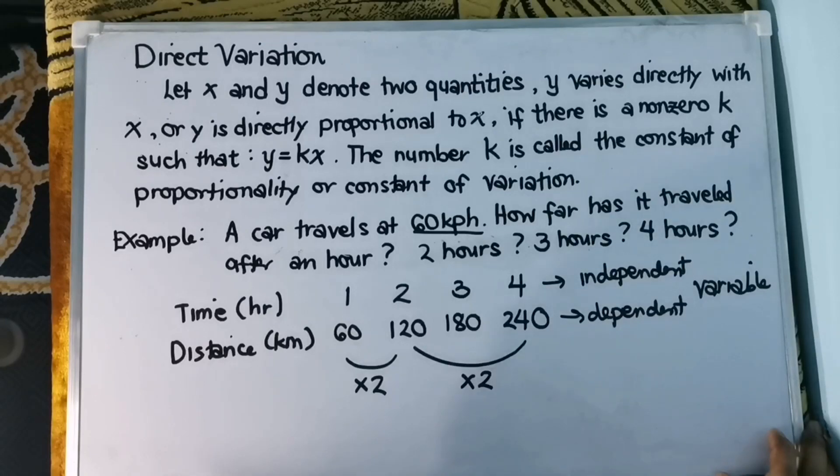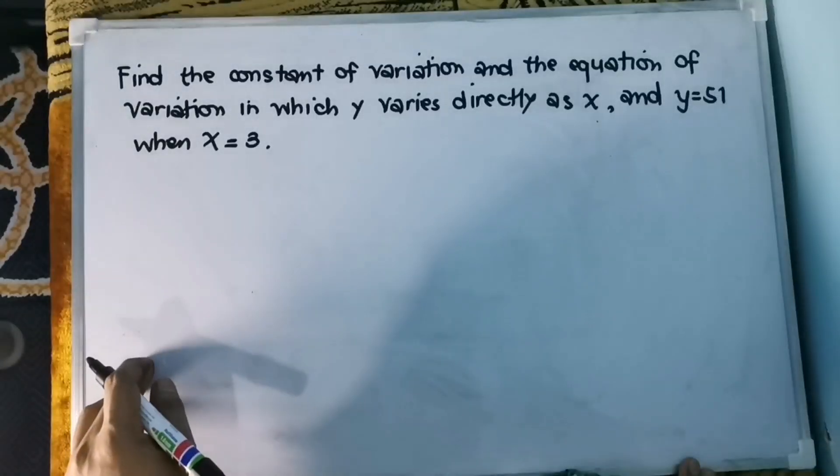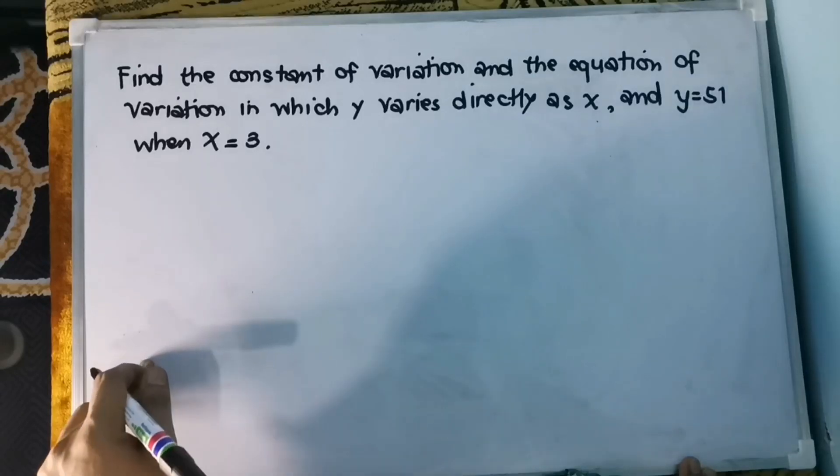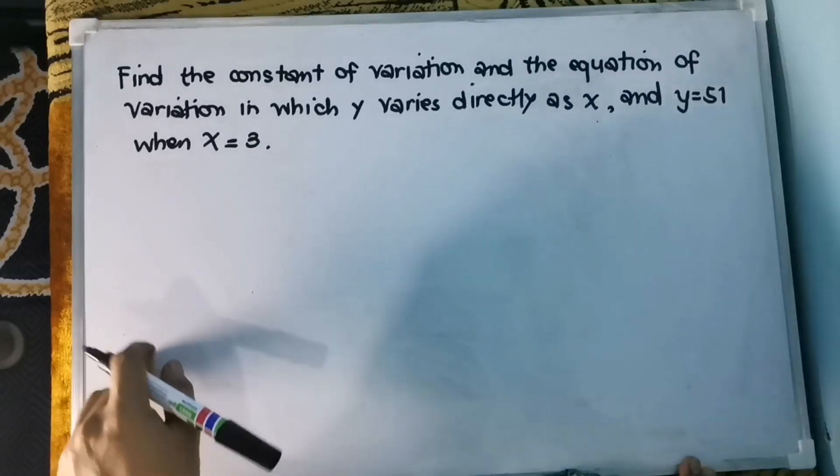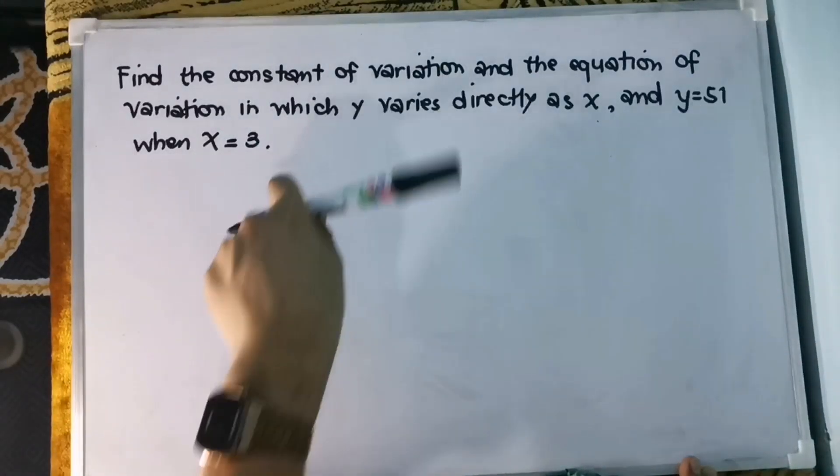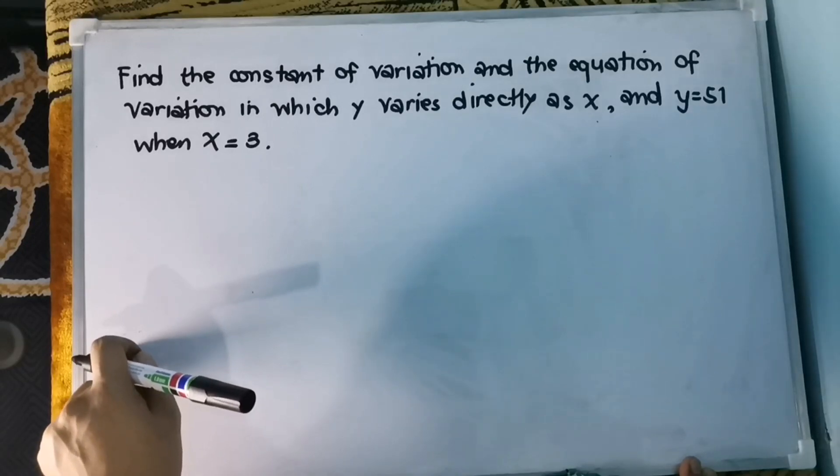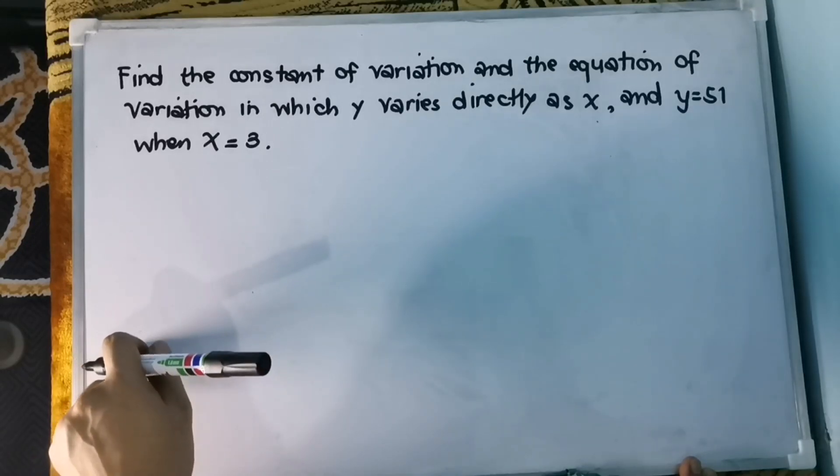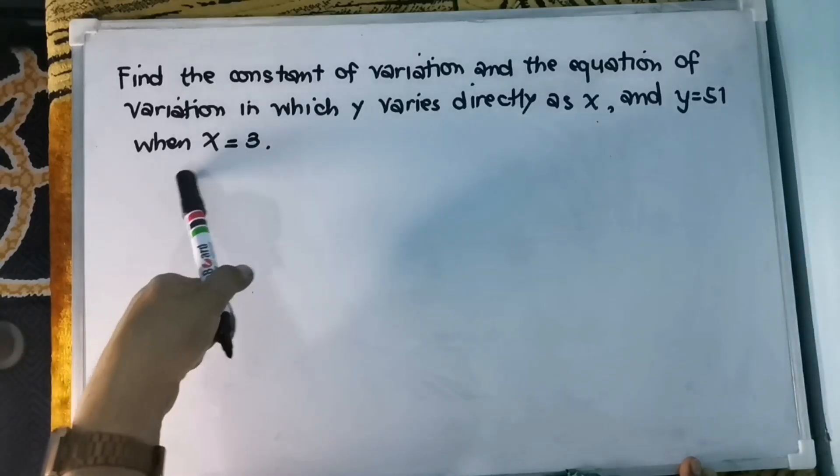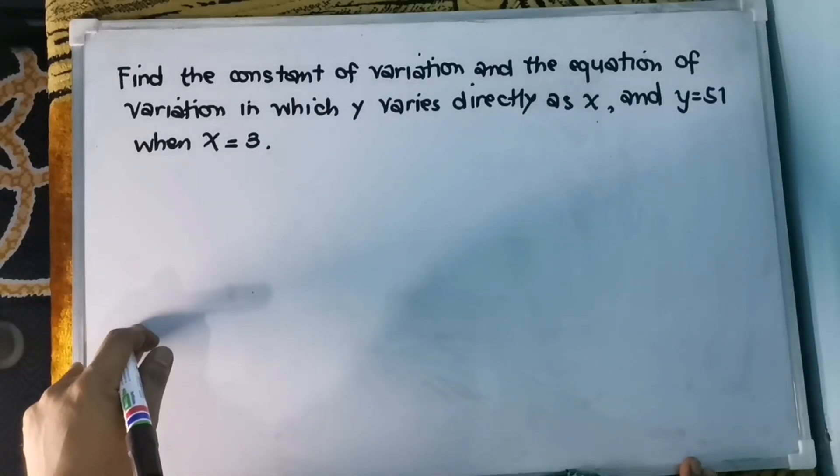Let's have another example that involves direct variation. Find the constant of variation. Mean to say that we are asked to find k. And the equation of variation in which y varies directly as x, and y equals 51 when x equals 3.